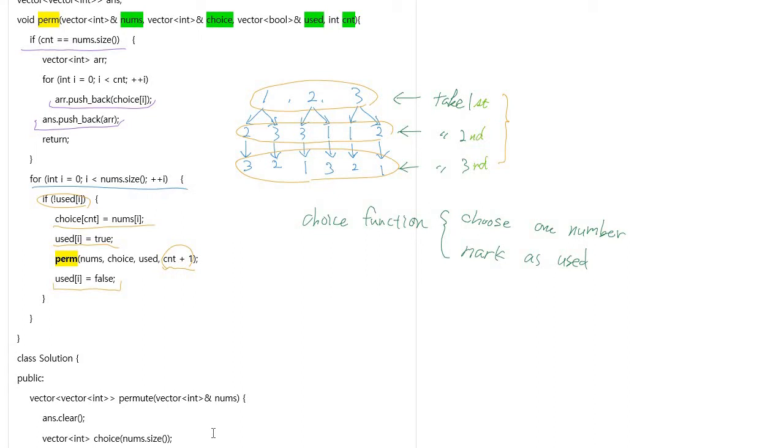chosen. You should not forget to set the used flag to false after finishing the recursive function, because in the next function call in the for loop, the current number could be chosen for a new permutation. This is the basic